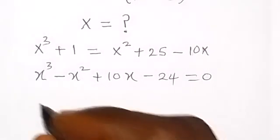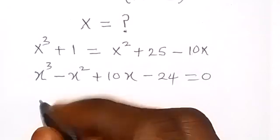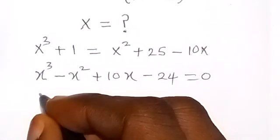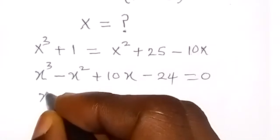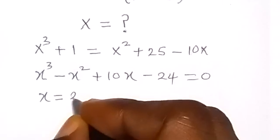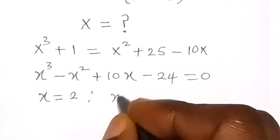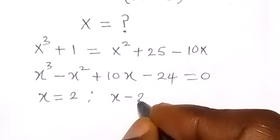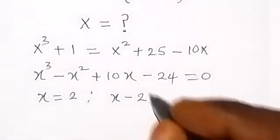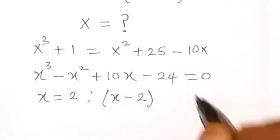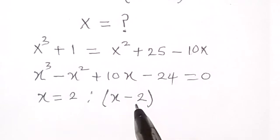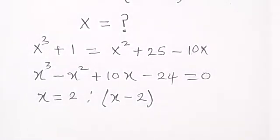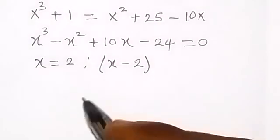This tells us that x equals 2 is a root of this polynomial. Therefore x minus 2 will be a factor — it will divide this polynomial without a remainder. So we already know one factor; now let's find the other two factors by dividing the polynomial by this known factor.